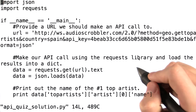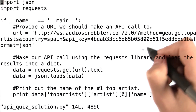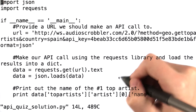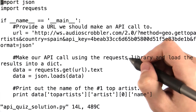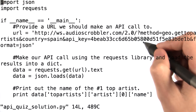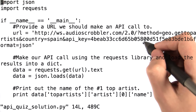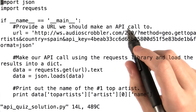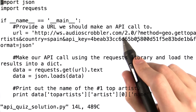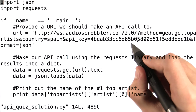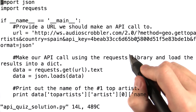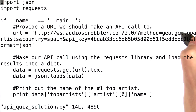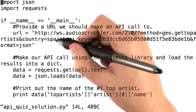The URL is the biggest difference between this code and the example code in the previous video. I've just changed the parameters in the URL variable. To make sure that I'm getting the top artists, I am calling the geo.getTopArtist method. I'm also passing the country parameters in by setting the parameter country equal to Spain.